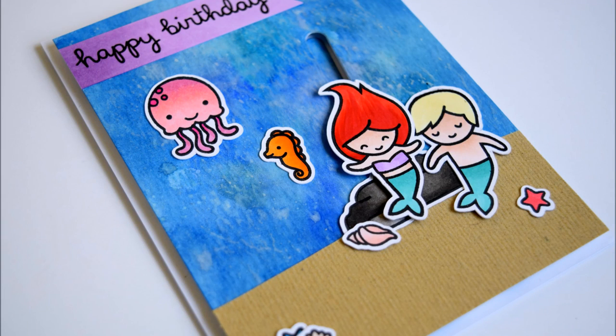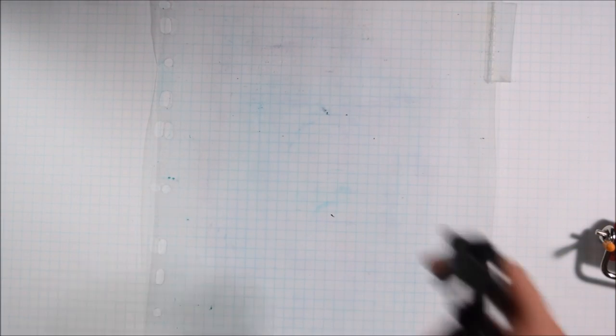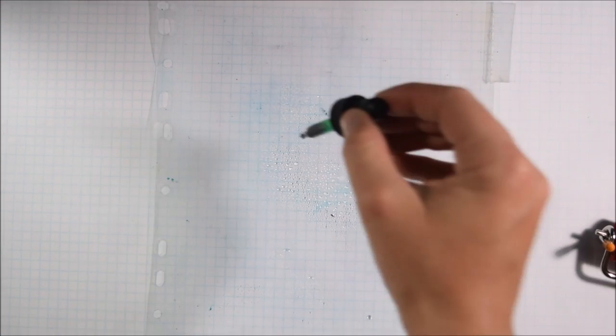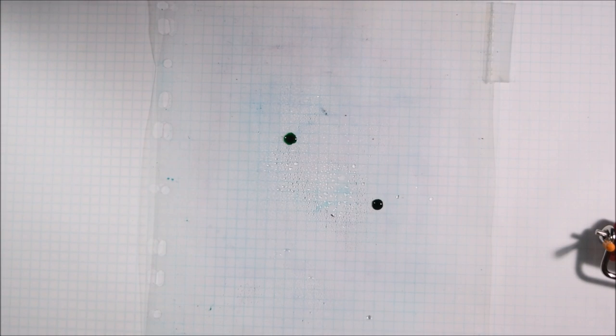Hey Crafty friends, it's Jess from JessCrafts.com and today I am here with a card for the Lawn Fawnatics Challenge number 7, which is to do watercoloring. And I'm going to do a watercolor ocean background.